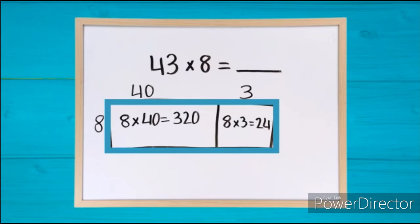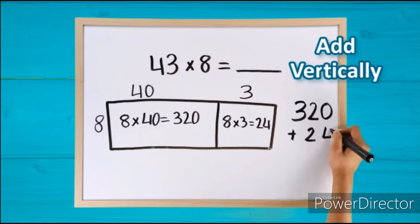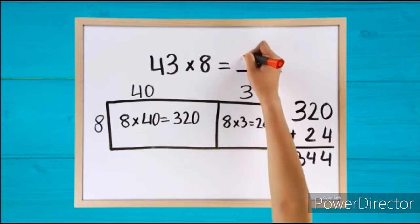To find the area of the entire rectangle, add 320 and 24 vertically. The total is 344. 43 times 8 equals 344.